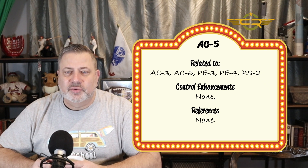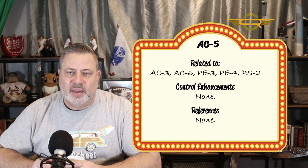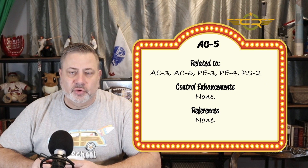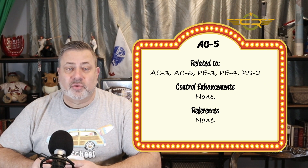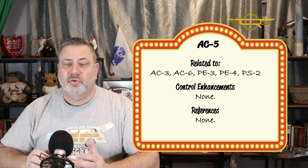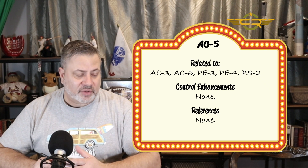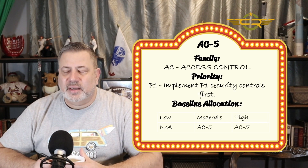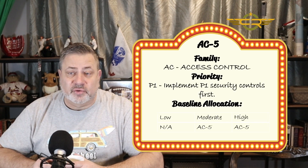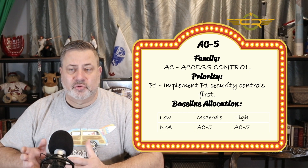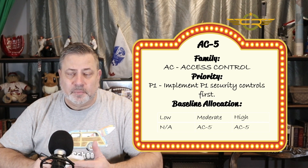This control is related to AC3, AC6, PE3, PE4, and PS2. There are no control enhancements — this is all there is to this control, no enhancements. It has no references defined by NIST, though there are plenty of references we can look at in system administration and security documentation.